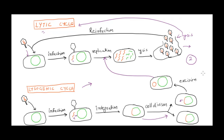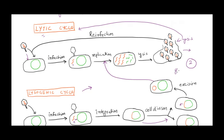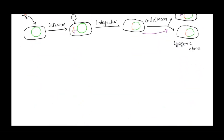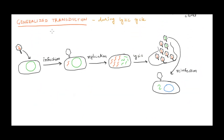Based on the type of life cycle, there are two types of transduction: generalized transduction and specialized transduction. The reason they are called generalized and specialized will be explained after describing the processes, as it will be easier to understand.